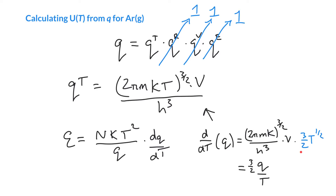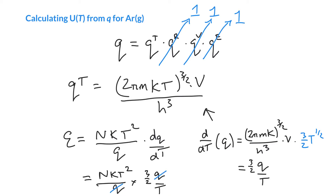The 3/2 comes from the derivative, and our temperature was T^(3/2), now it's T^(1/2), so we've divided it out by Q. That's helpful because when we substitute back into the expression — N k T² over Q — and write the derivative in terms of Q itself as (3/2)Q/T, we get some cancellation. The partition function cancels, the T² and one T cancel, leaving just N k T times 3/2.